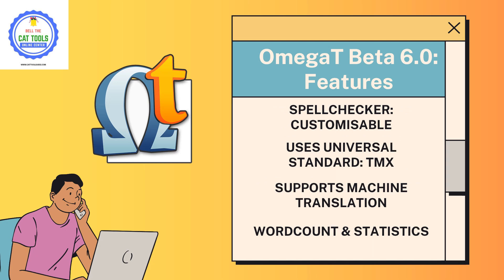OmegaT also has a good spell checker where you can add certain language features. Additionally, OmegaT uses the universal standard TMX — Translation Memory Exchange file format.